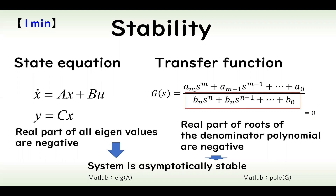And in case of transfer function, if the real part of roots of the denominator polynomial are negative, then the system is asymptotically stable. The transfer functions are given like this.